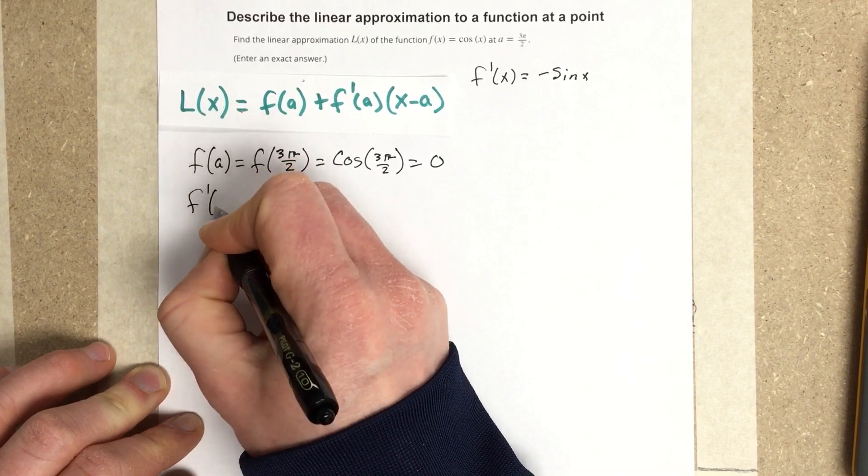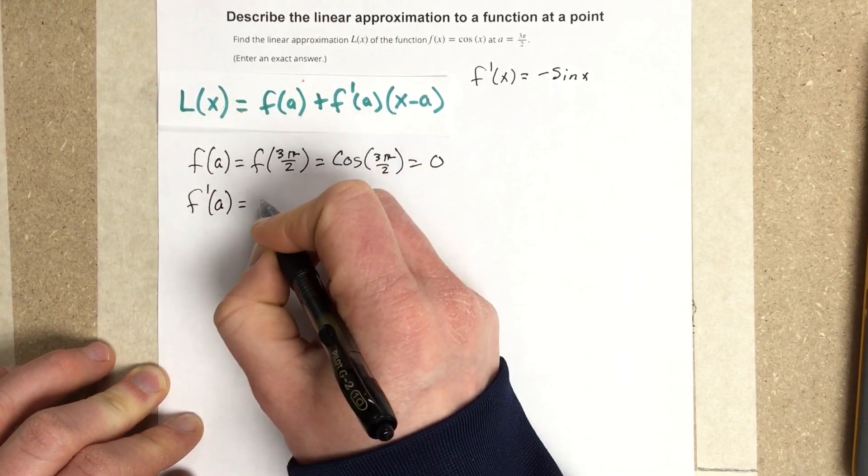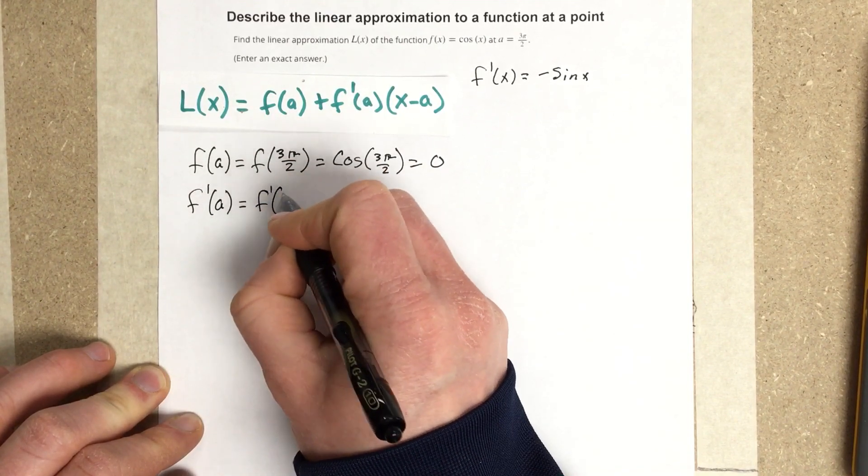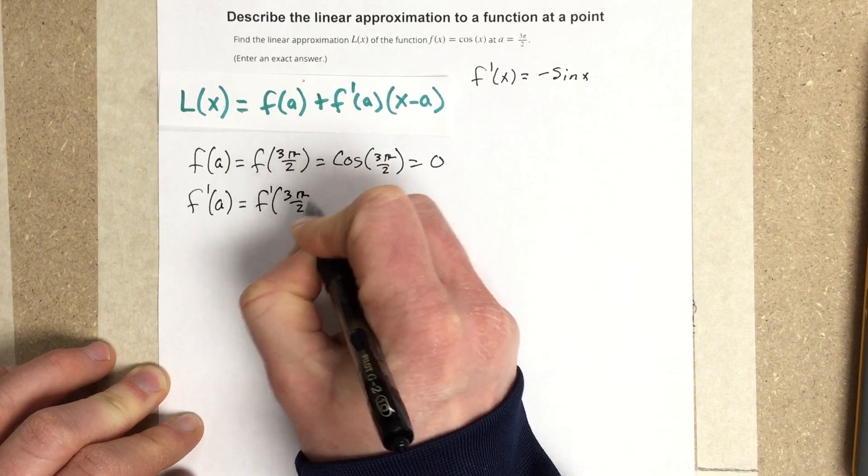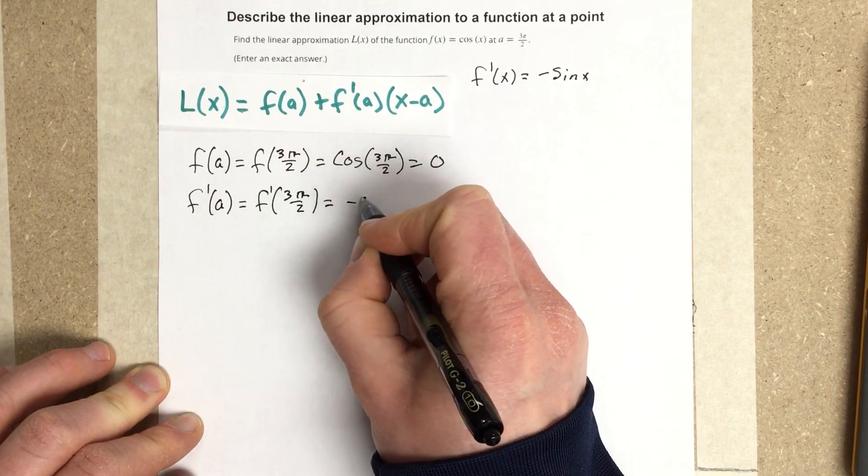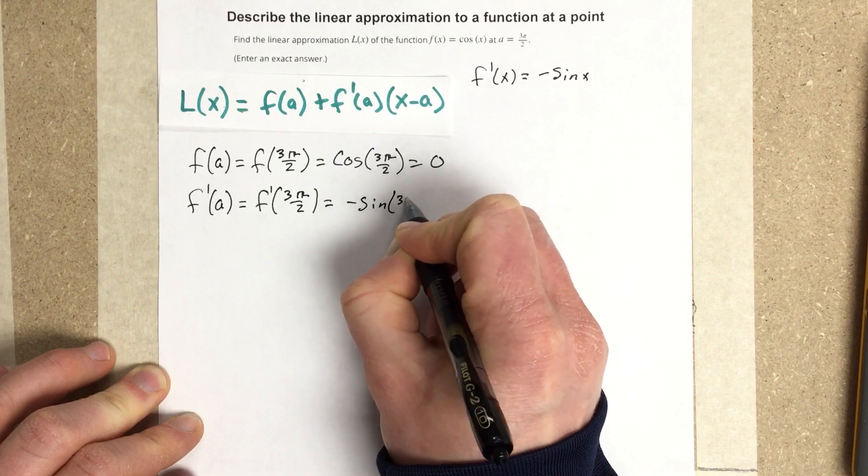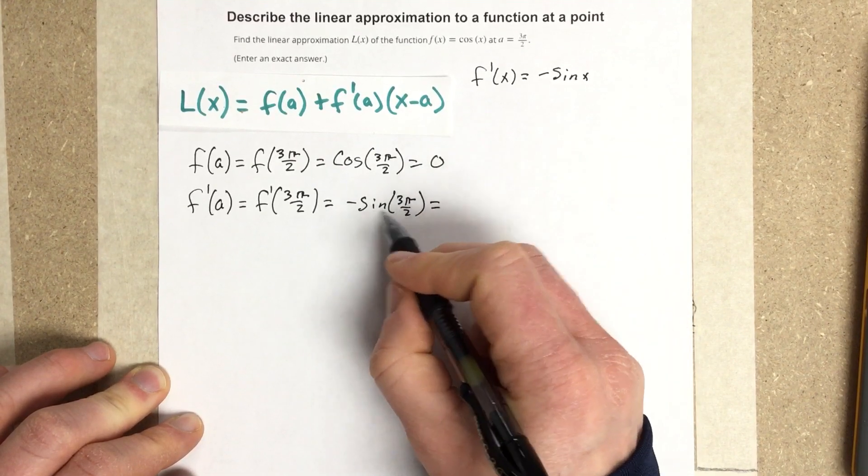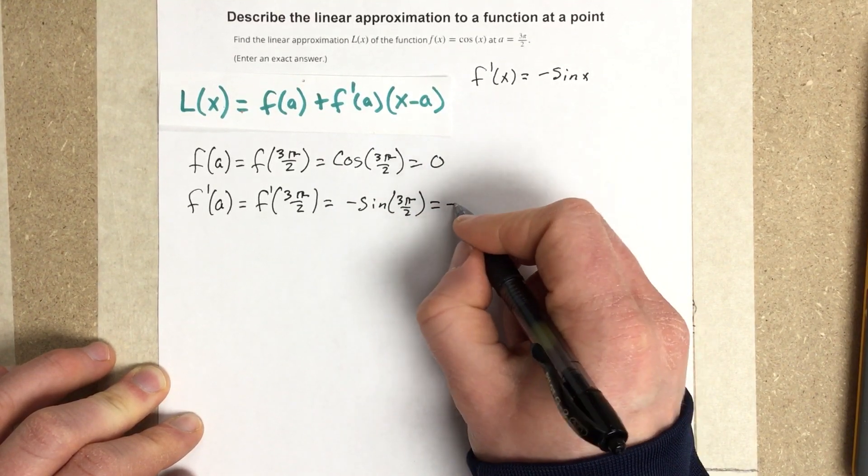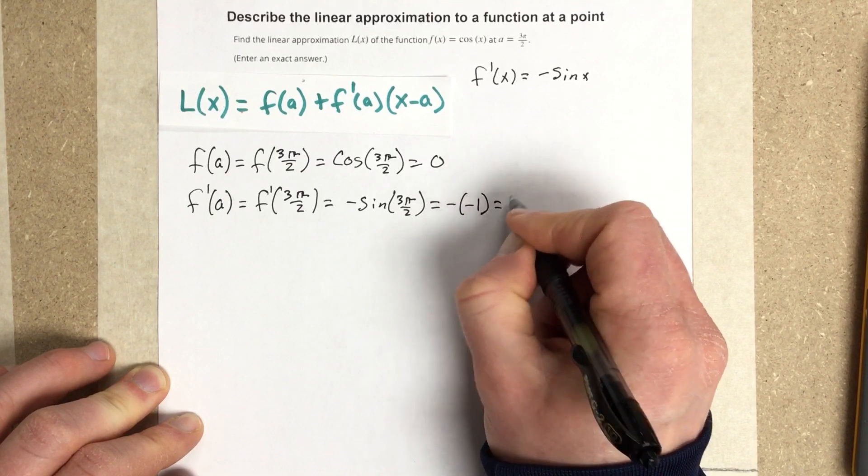And then I can do f'(a), which would be f'(3π/2), which is -sin(3π/2). Sin(3π/2) is -1, so I get -(-1), which is positive 1.